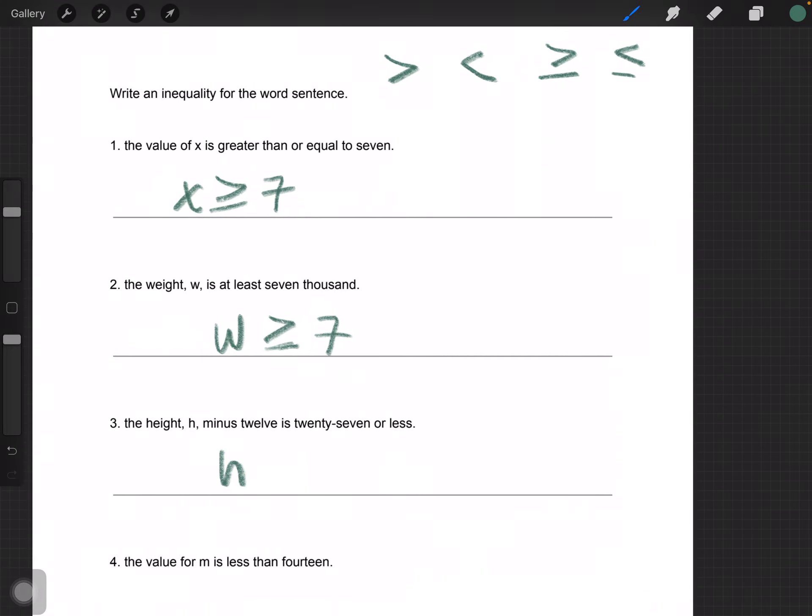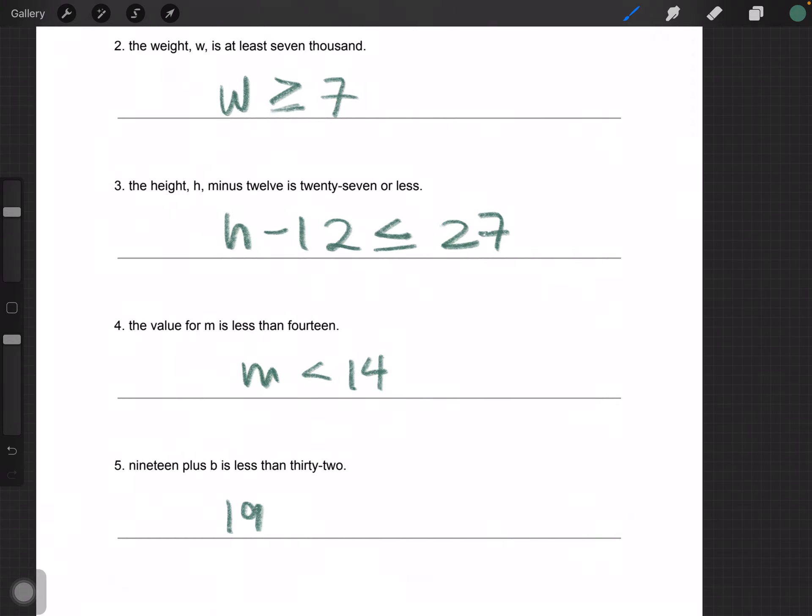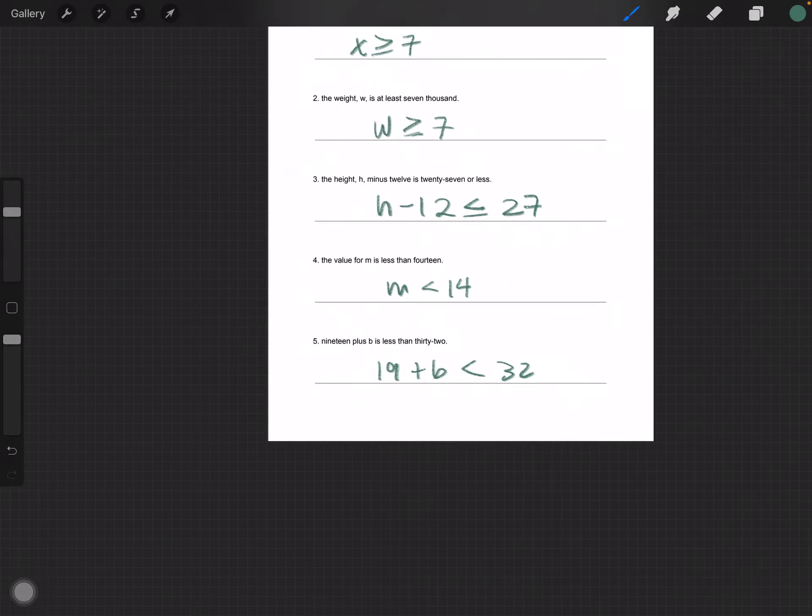Okay, the height H minus 12 is 27 or less. So it is, which means it can also be equal to 27, but it can also be less than, less than or equal to 27. The value M is less than 14. That one's pretty easy. And 19 plus B is less than 32.